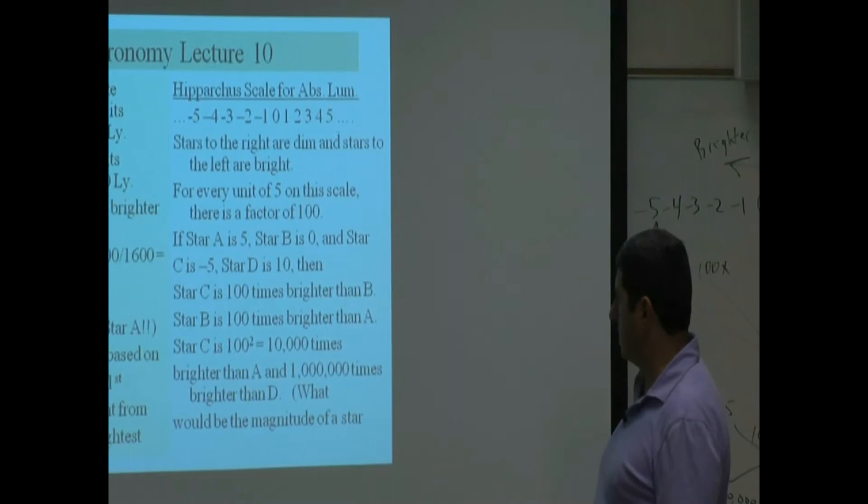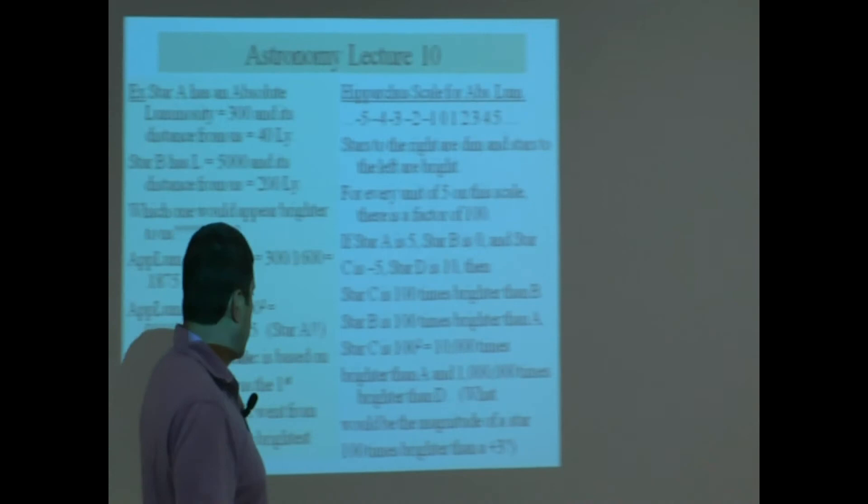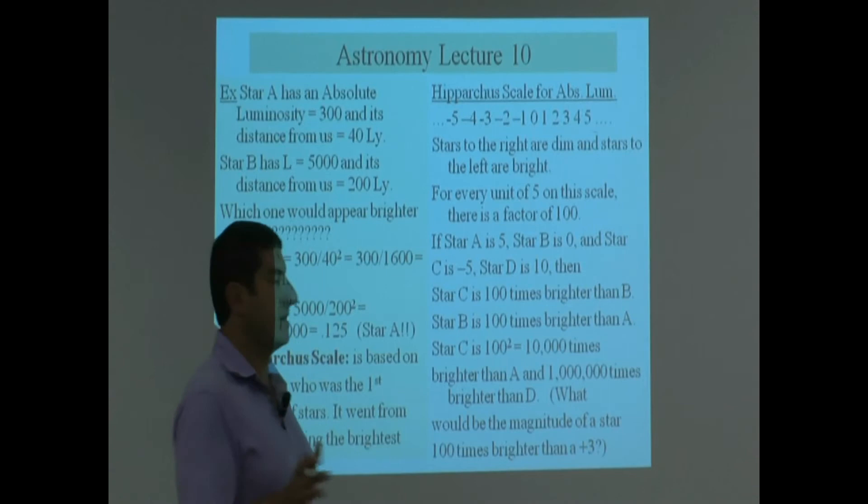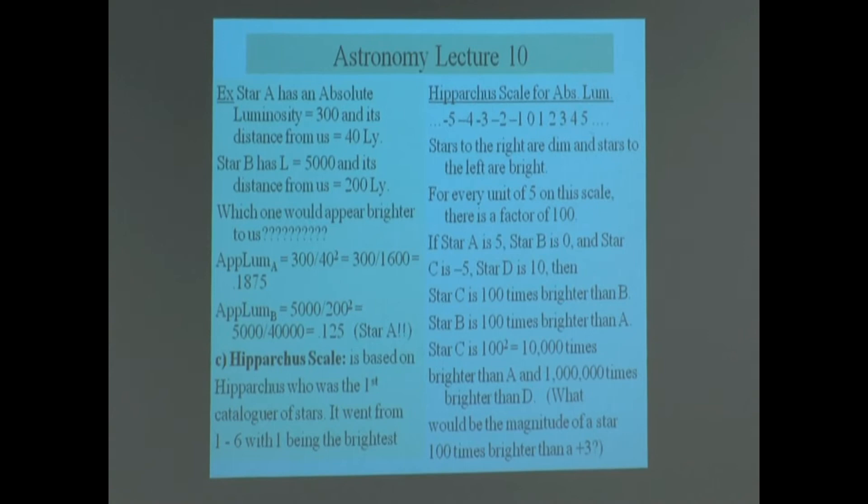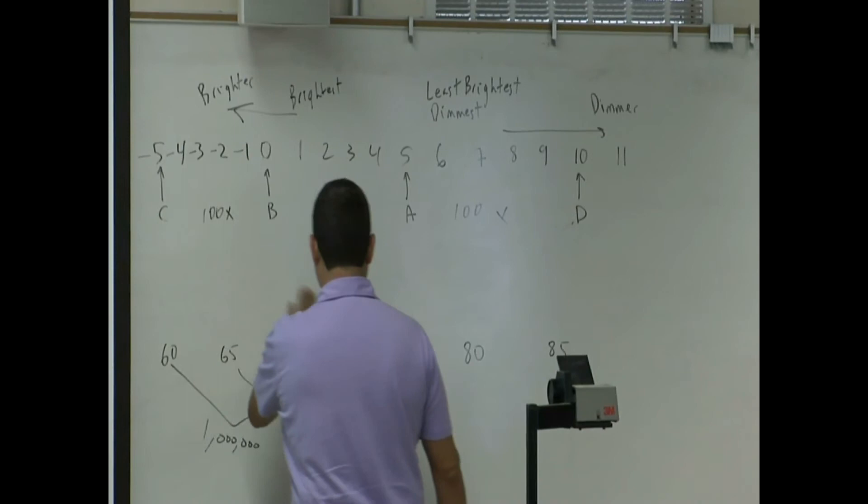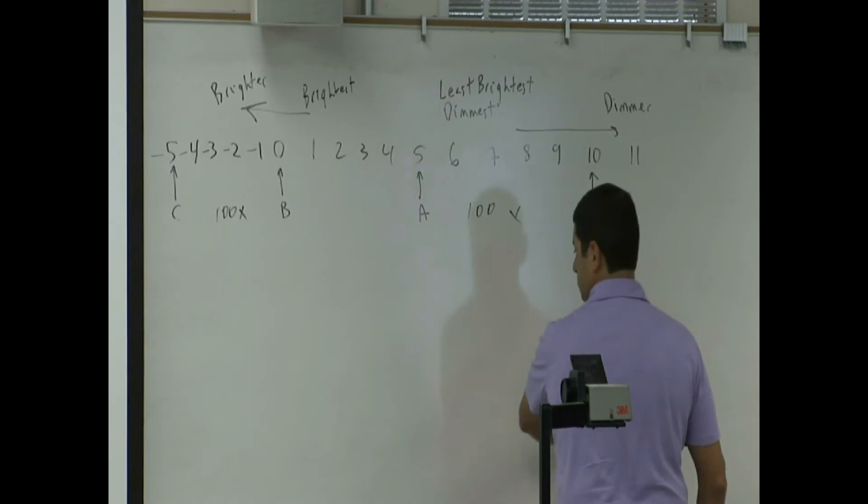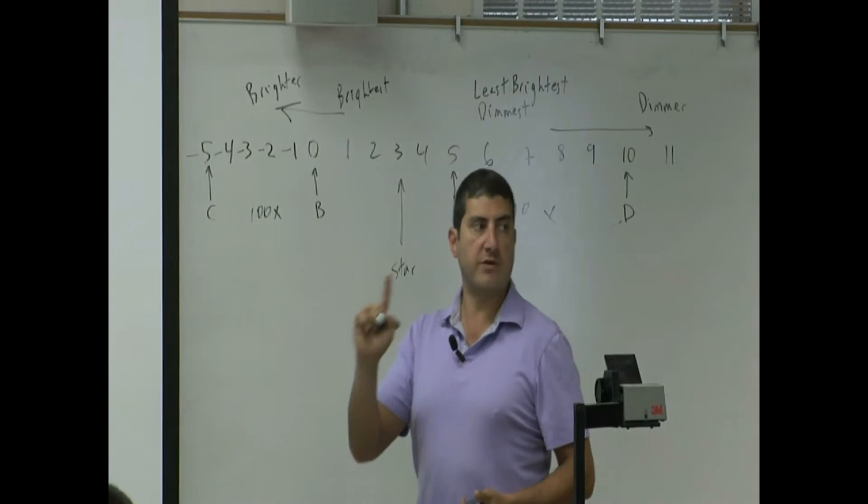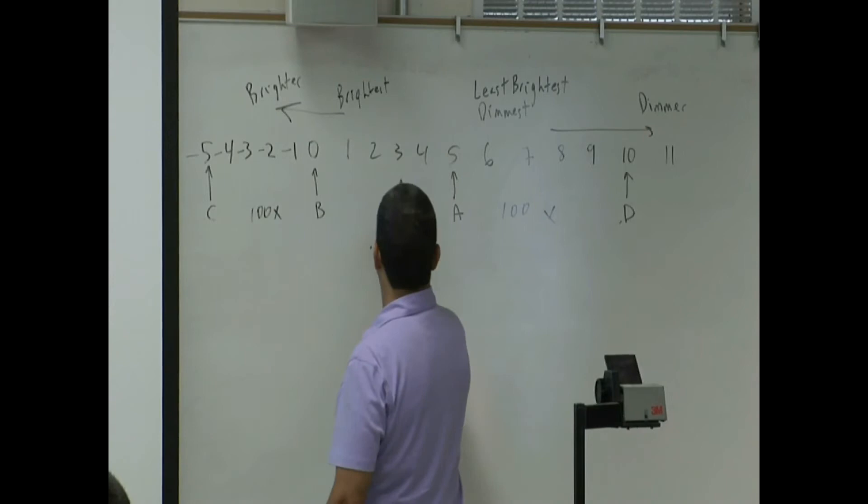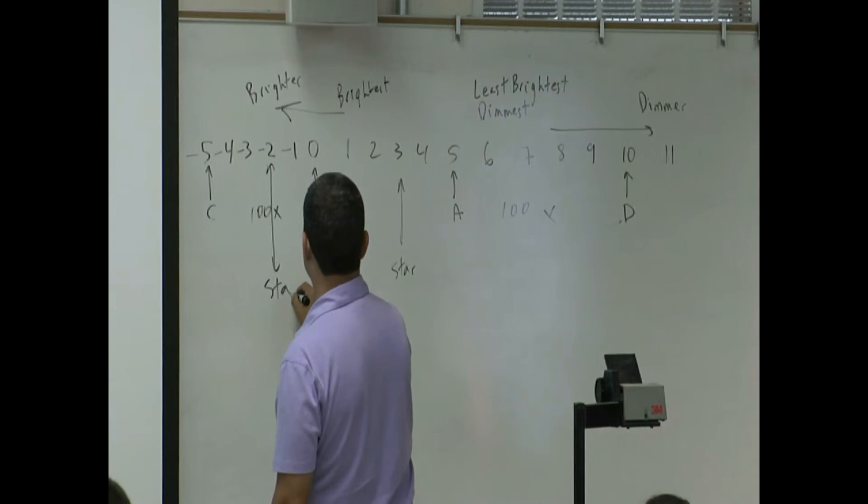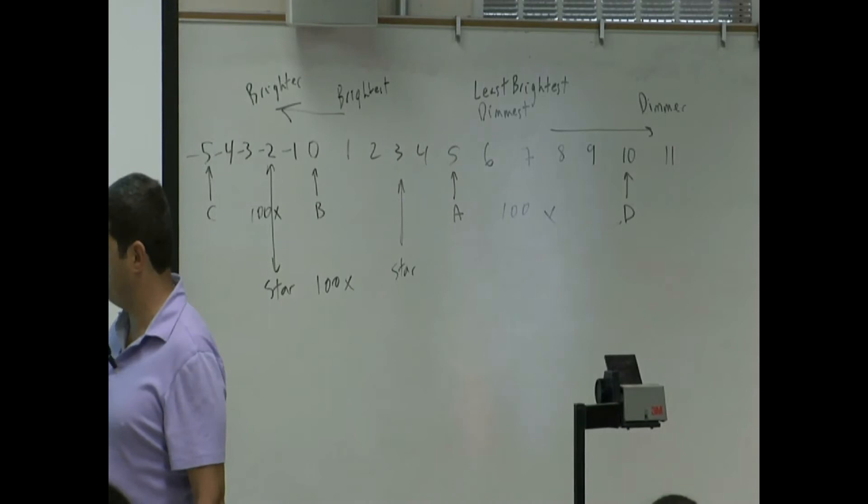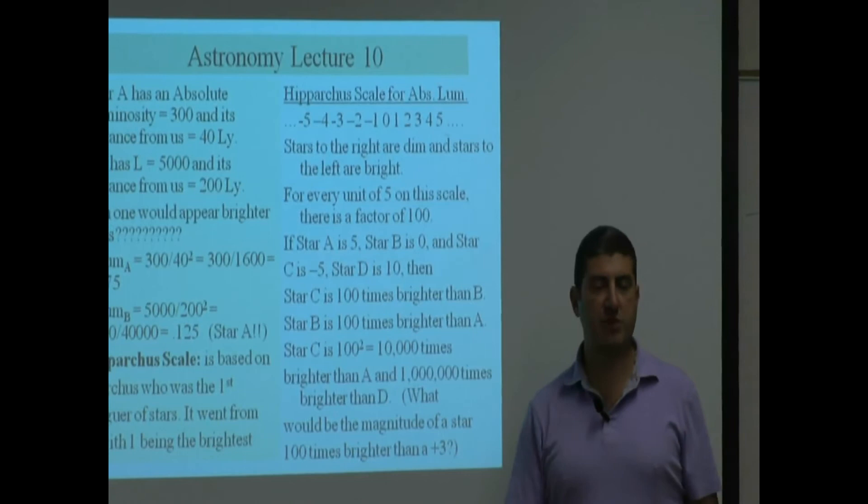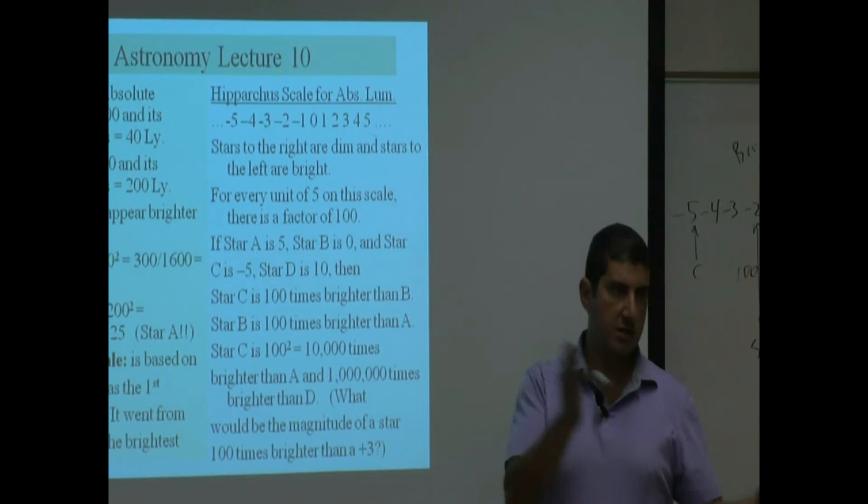So what would be the magnitude, the Hipparchus scale magnitude of a star 100 times brighter than a plus three? So if there was a star here at 3, and if I want to know what's the magnitude of a star 100 times brighter than that, what do I do? I go five units to the left of that, just five units to the left. One, two, three, four, five. So this star is 100 times brighter than that star. So what's the answer to this question? What is the magnitude of a star 100 times brighter than the plus three? Negative two. It's five units to the left of positive three.